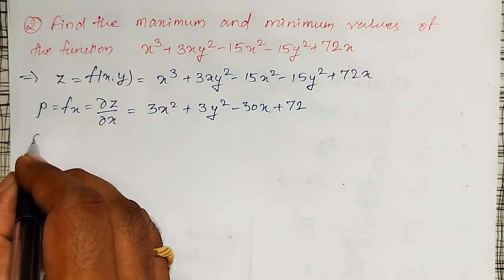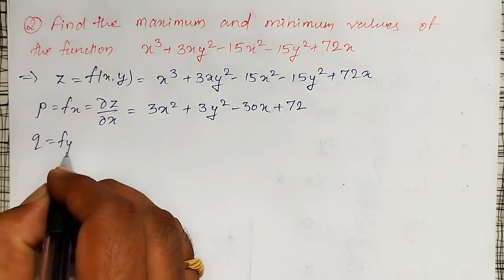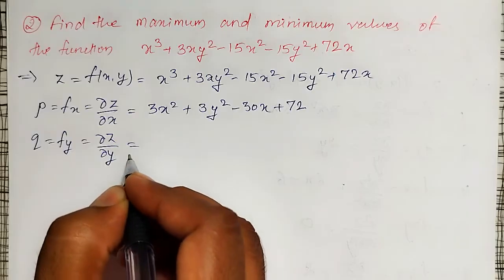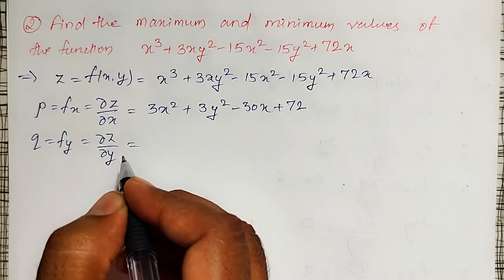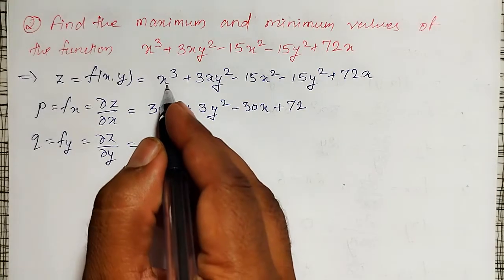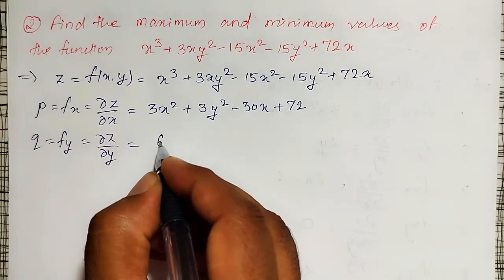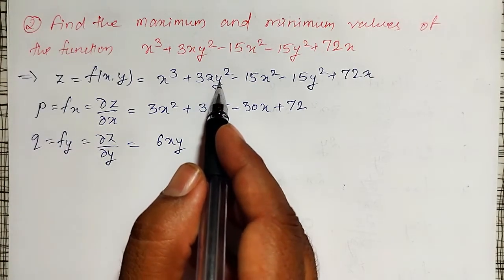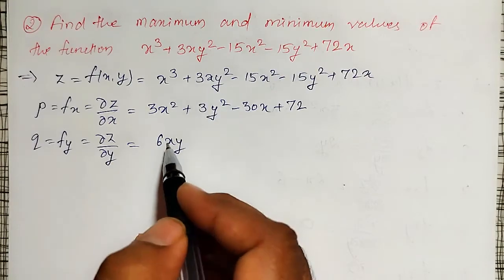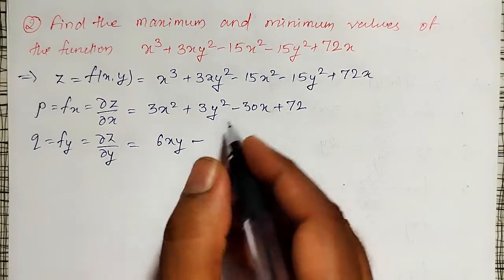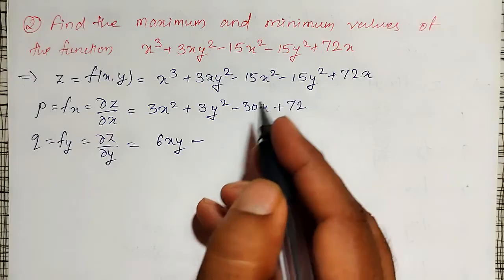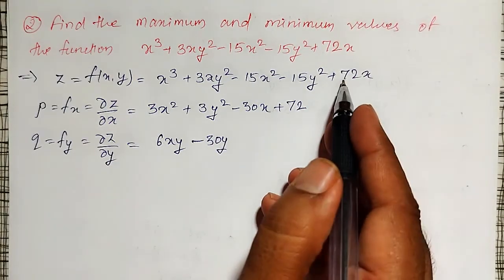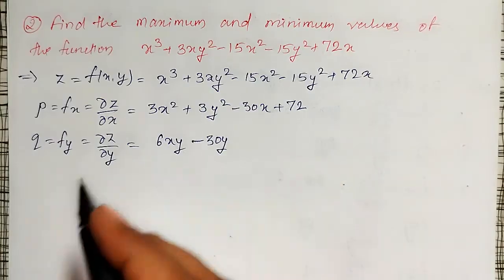Like that, q = fy = ∂z/∂y. Finding the partial derivative with respect to y: the first term is 0, and 3xy² differentiates to 6xy (x is constant, y² gives 2y, so 2×3 = 6), giving 6xy - 30y. The remaining terms are 0. So q = 6xy - 30y.